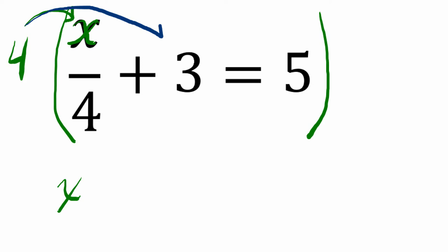Then we're going to do 4 times 3. That's just 12. And on the right side of the equation, we have 4 times 5. We want to multiply everything by 4 to maintain equivalence. And that's just 20.